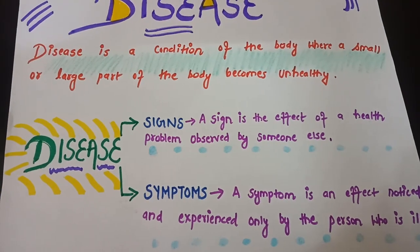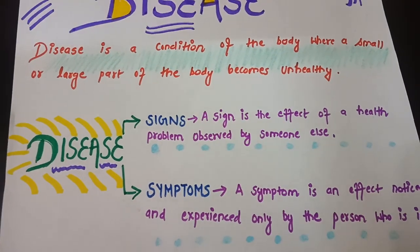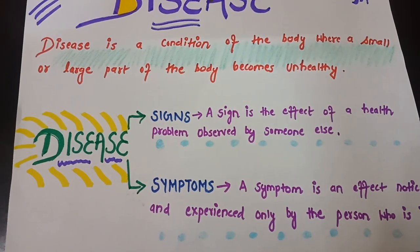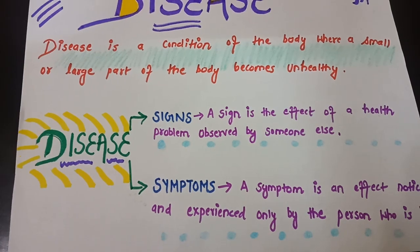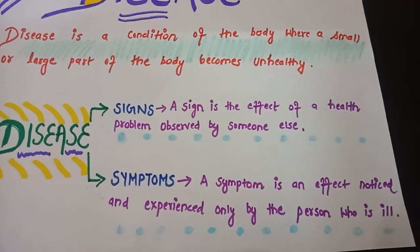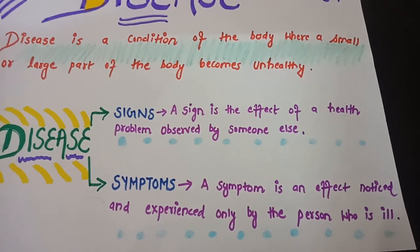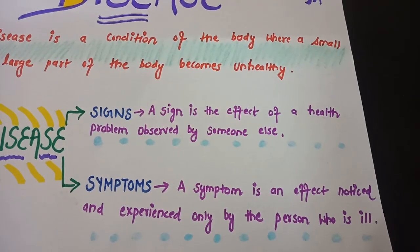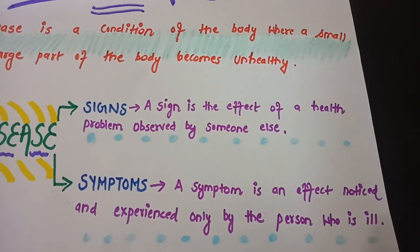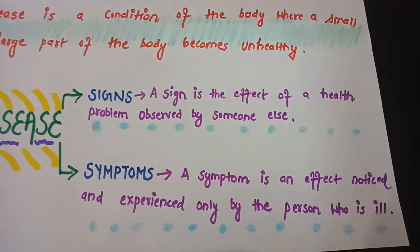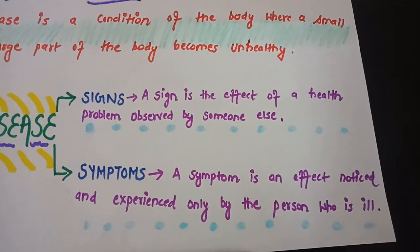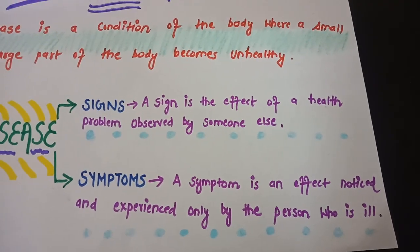If a person is suffering from any kind of disease, how can we recognize it? We can find out with the help of signs and symptoms. There is a lot of difference between signs and symptoms. A sign is the effect of a health problem observed by someone else, while a symptom is an effect noticed and experienced only by the person who is ill.